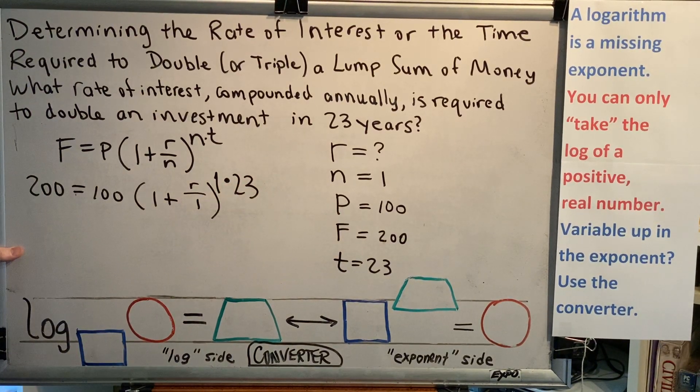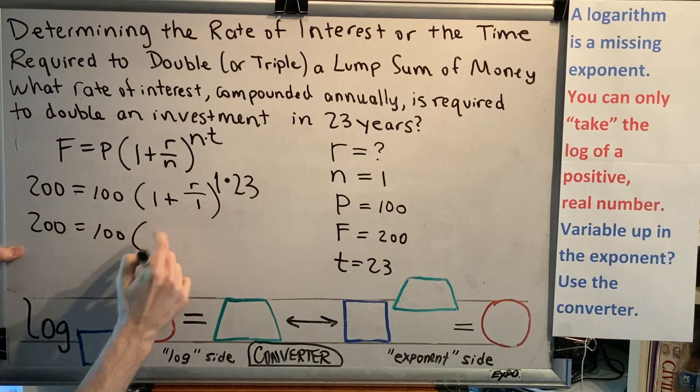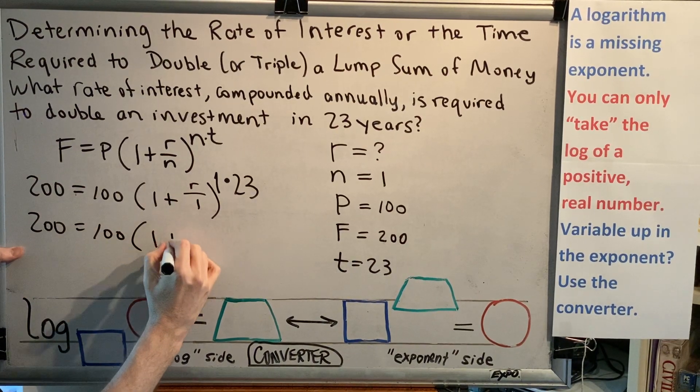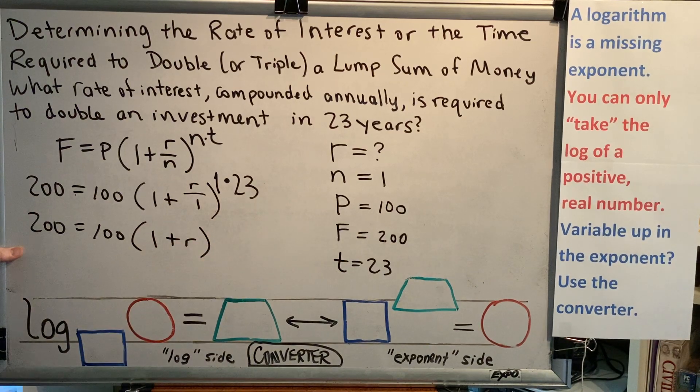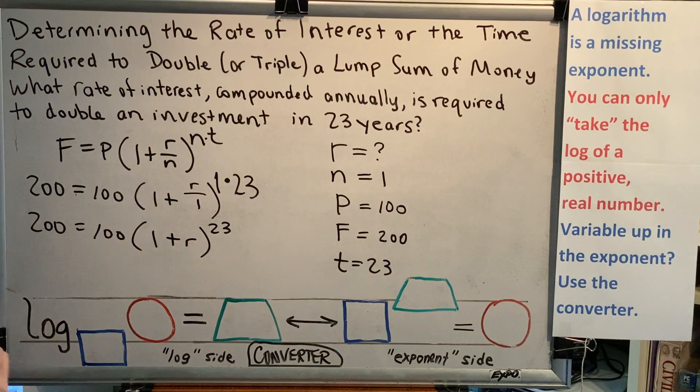This is not a decimal, it's a multiplication symbol. Now we simplify. Anything divided by 1 is itself, so inside we have 1 plus R. Anything times 1 is itself, so my exponent is 23.